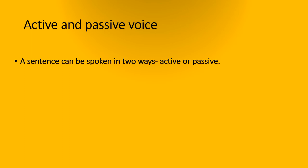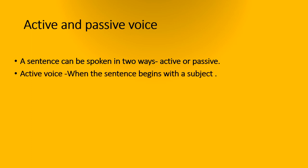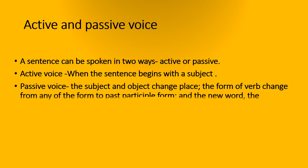A sentence can be spoken in two ways: active or passive. Active voice is when the sentence begins with a subject. In passive voice, the subject and object change place. The form of the verb changes from any form to the past participle form, and the preposition 'by' comes into the sentence.